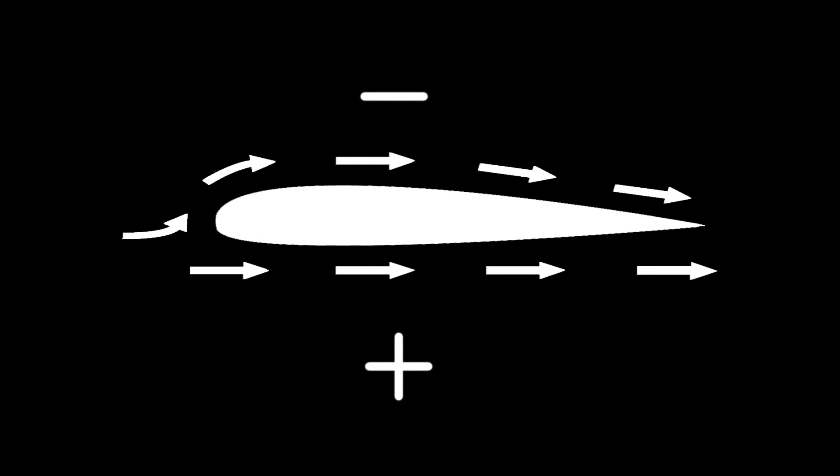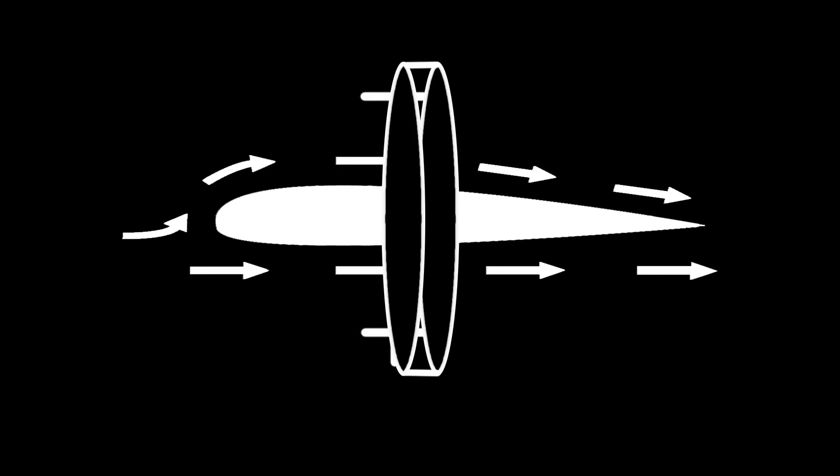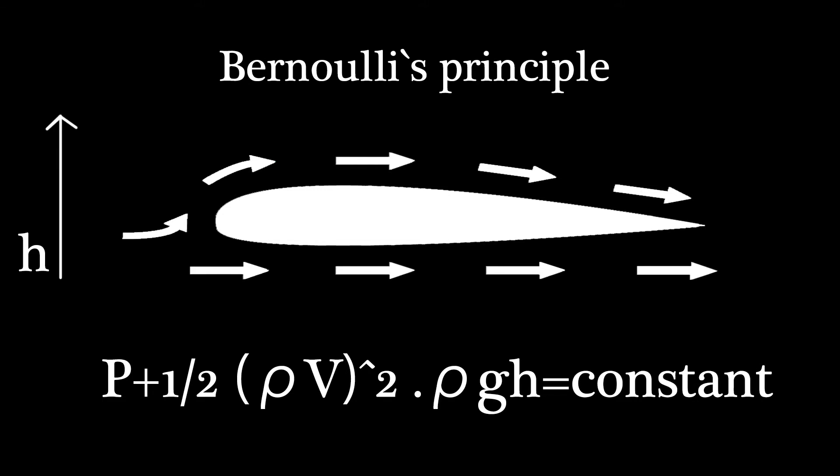Bernoulli's principle applied to an asymmetrical profile states that the same amount of medium needs to be there once the wing has passed through the medium. Because of the difference in distance the medium needs to travel over each side of the profile, there must be a speed difference.